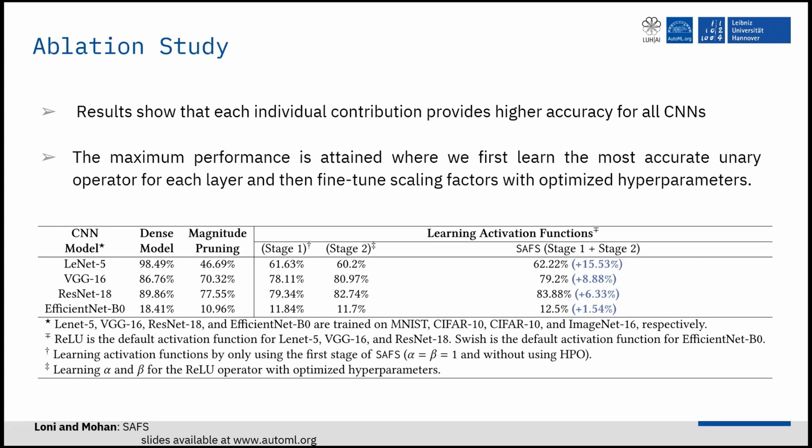For the ablation study, the table shows the effect of each individual optimization stage on the performance of sparse convolutional neural networks. As you can see, results show that each individual contribution provided by SAFS yields higher accuracy for all networks.